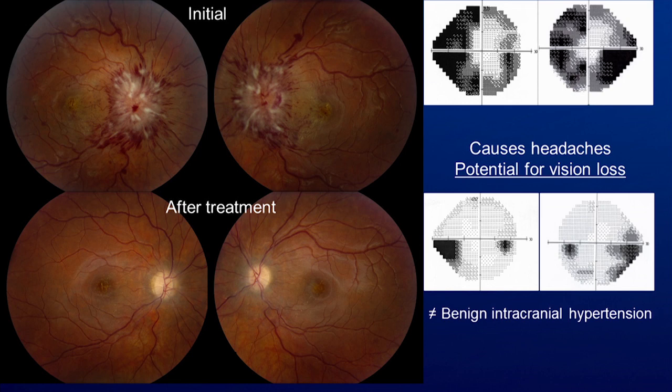One of the old names for this condition was benign intracranial hypertension, again trying to note that there is no tumor. However, we now know that this disease is far from benign because of the significant risk for vision loss.